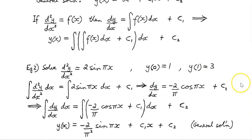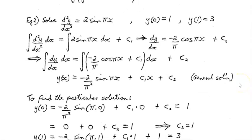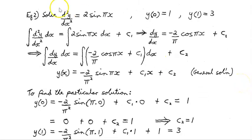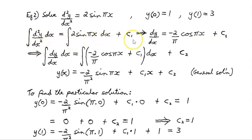Let's solve d²y/dx² = 2 sin(πx), given the boundary conditions y(0) = 1 and y(1) = 3. Anti-differentiating the first time: the integral of d²y/dx² dx is equal to the integral of 2 sin(πx) dx plus c1.